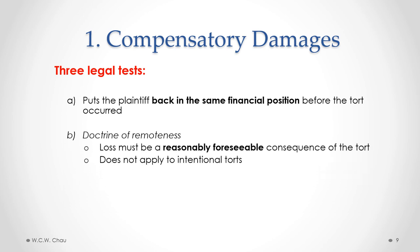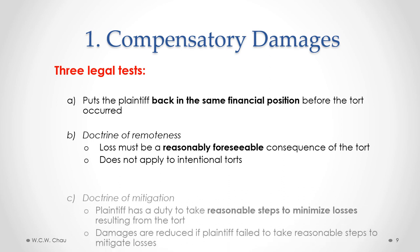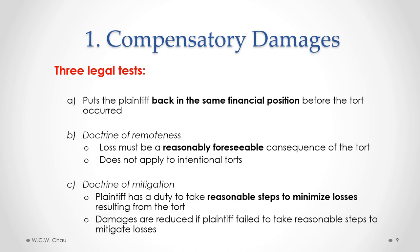The second test is called the Doctrine of Remoteness, which limits the ability to claim losses to only those losses that can be reasonably foreseen as a consequence of the tort. If a loss is not a reasonably foreseeable consequence, that loss is not allowed. The Doctrine of Remoteness does not apply to intentional torts — it does apply to negligence torts. The third test is the Doctrine of Mitigation, which says the plaintiff has a duty to take reasonable steps to minimize the losses arising from the tort. If the plaintiff does not take those reasonable steps, the damages they are entitled to are reduced.